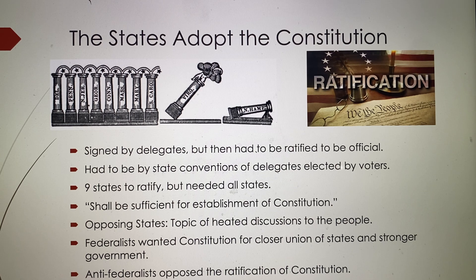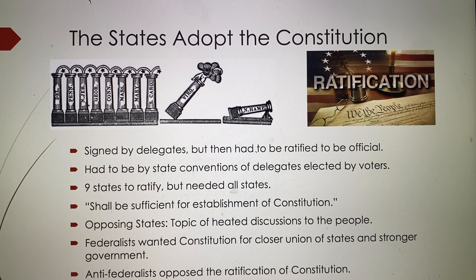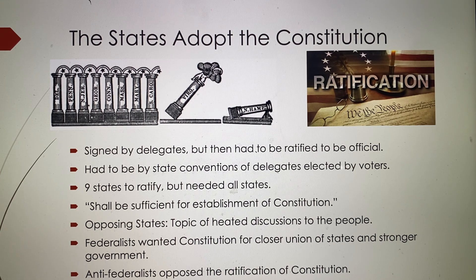The topic became heated in some states. Federalists were those who wanted and needed the Constitution — they were all-out for it. They wanted a closer union of the United States and a stronger government. But there were Anti-Federalists who opposed the ratification of the Constitution.